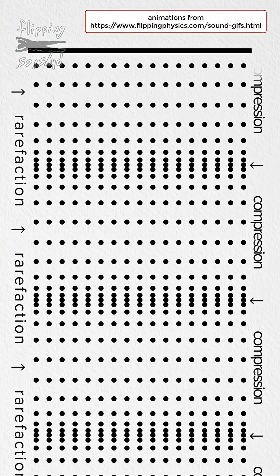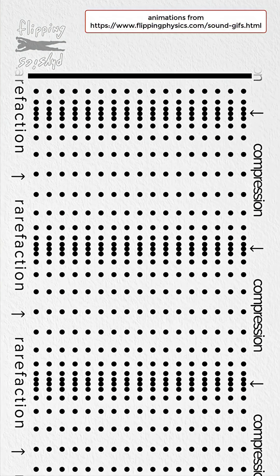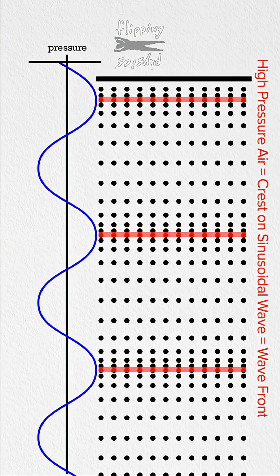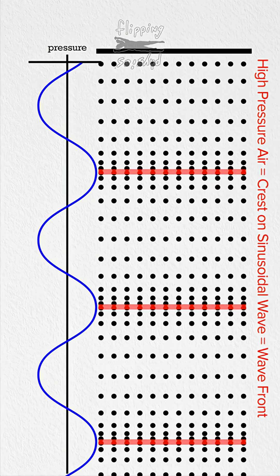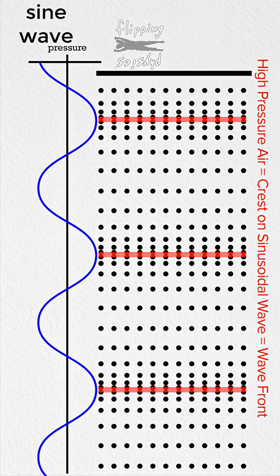Sound waves are made by vibrating air particles that bump into each other. Rather than drawing all of the individual air molecules, many times we represent a sound wave by a sine wave as pictured here.